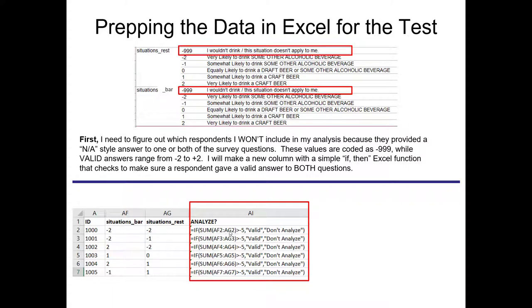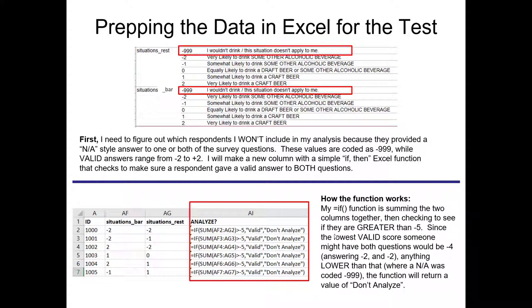I'm going to do something a little different here to illustrate the use of an if statement with a sum function attached to it. What we're going to do is we're going to create an if statement that sums up the two columns for each row. And it says that if the summation of the two of them is greater than negative five, it's a valid record, meaning we do want to include it in our analysis. Otherwise, it'll provide a label to us to not analyze it.